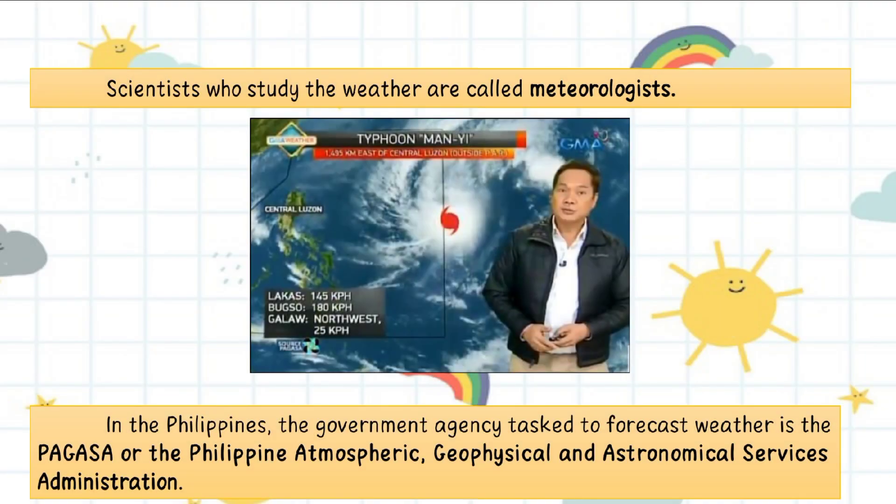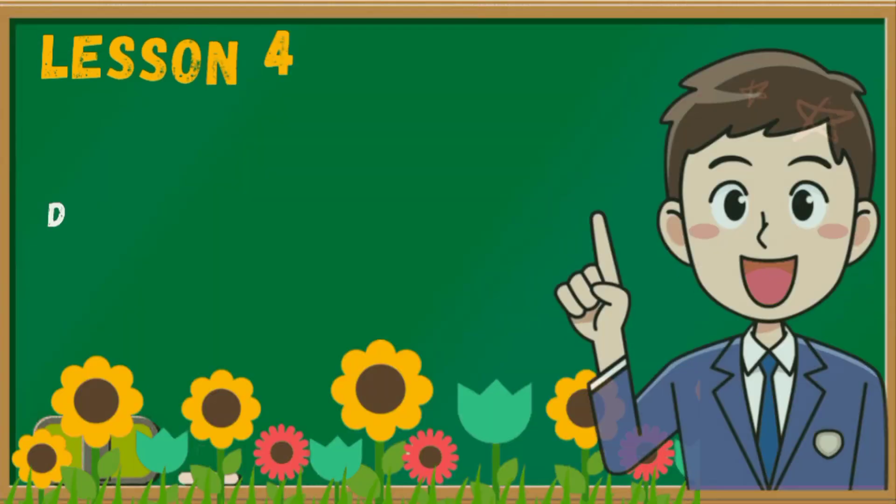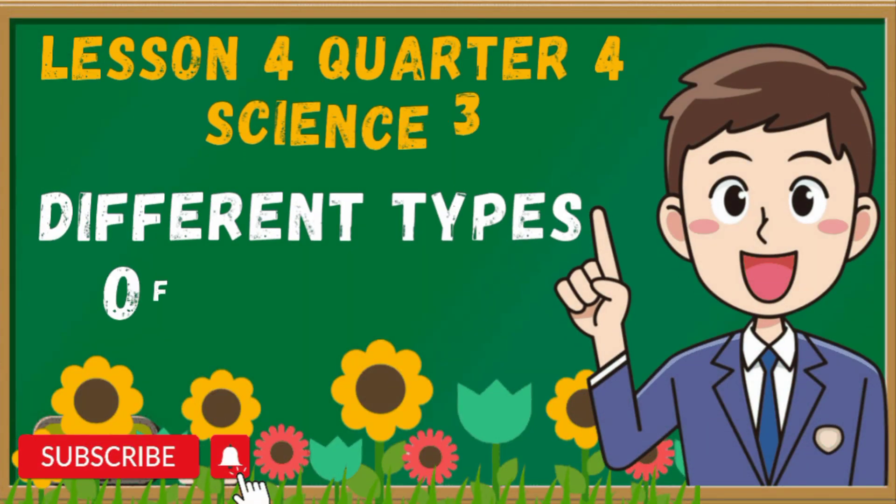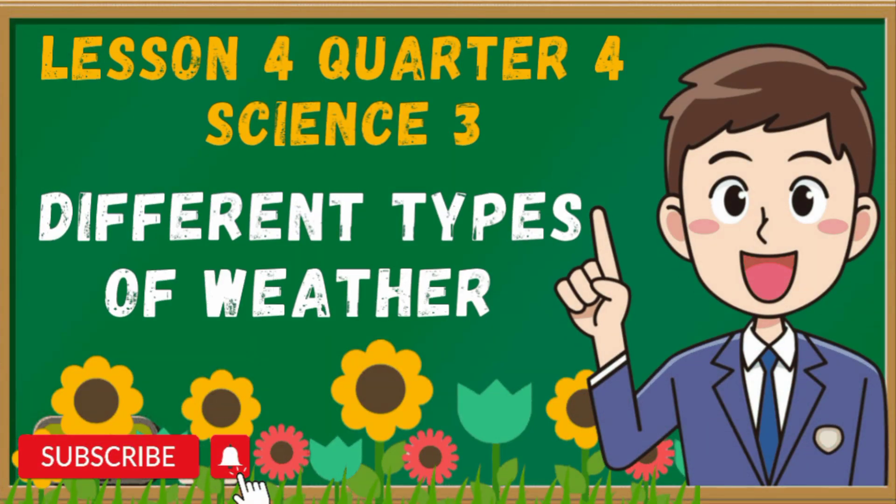The scientists who study the weather are called meteorologists. In the Philippines, the government agency tasked to forecast weather is the PAGASA, or the Philippine Atmospheric, Geophysical and Astronomical Services Administration. That's all for our lesson for today.